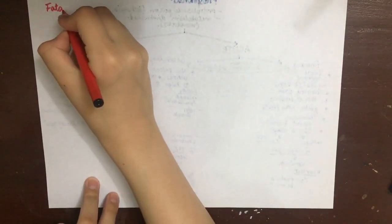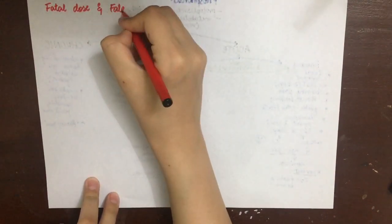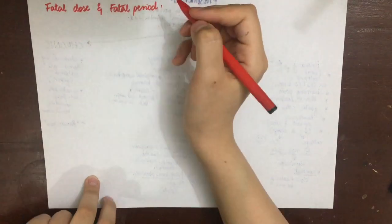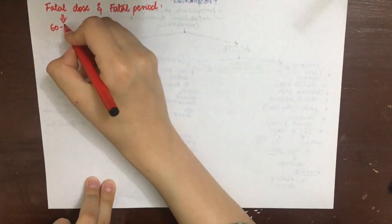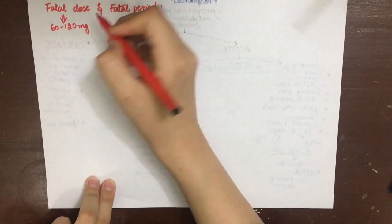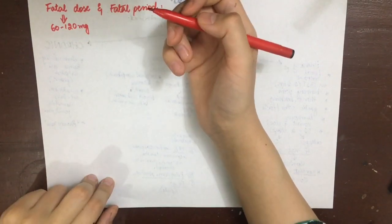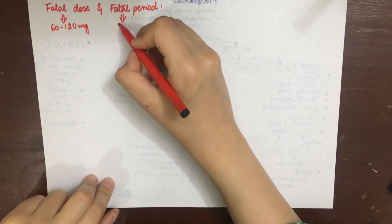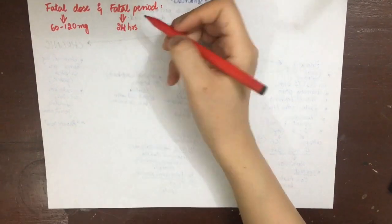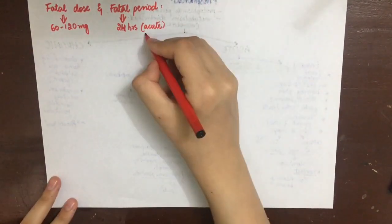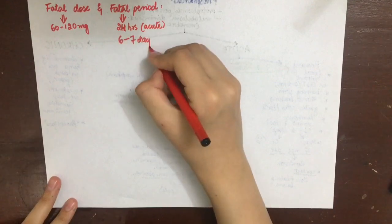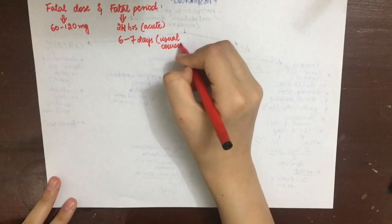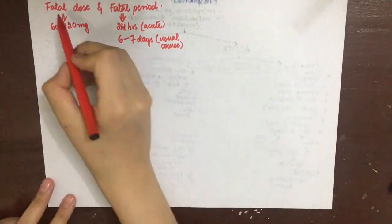The fatal dose is about 60 to 120 milligrams, but if it is vomited out the patient may recover and have less severe damages. The fatal period is about 24 hours in acute poisoning, and after remission the usual course is about six to seven days or longer.